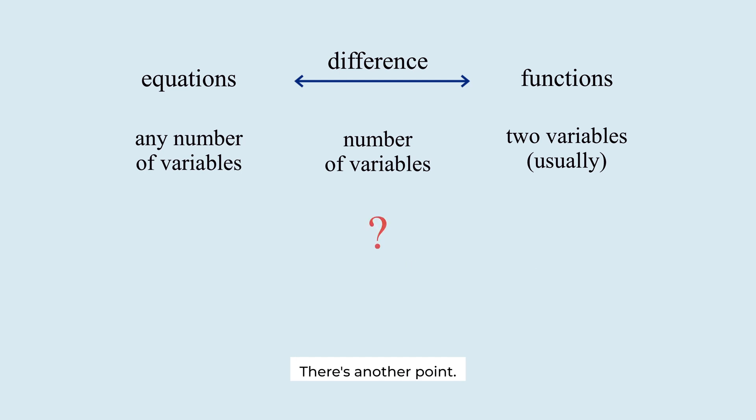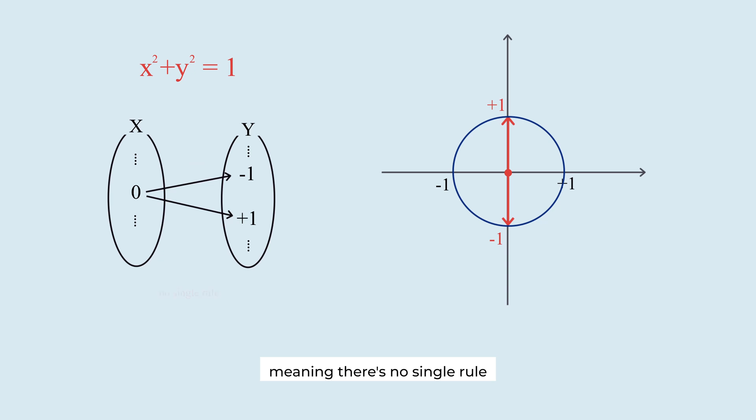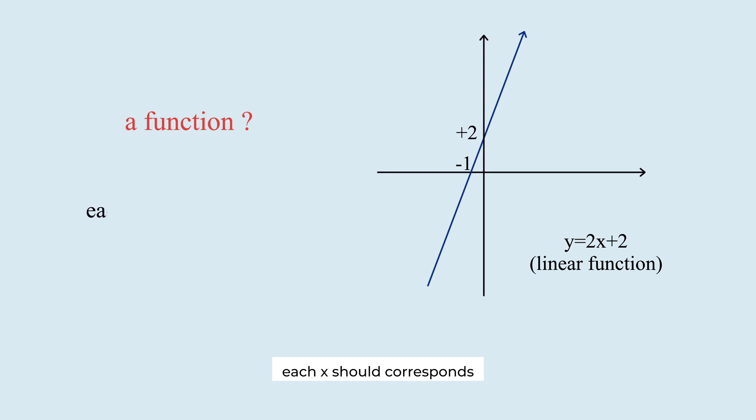There's another point. This is an equation but not a function. Because when x equals zero, there are two y values, minus one and plus one. Meaning there is no single rule linking each x to y. For it to be a function, each x should correspond to only one y.